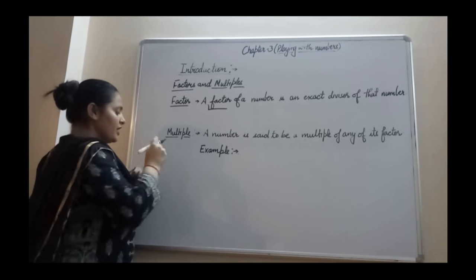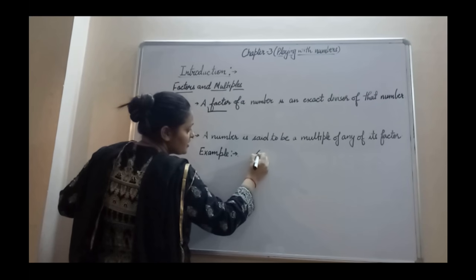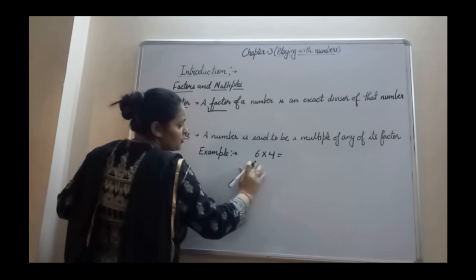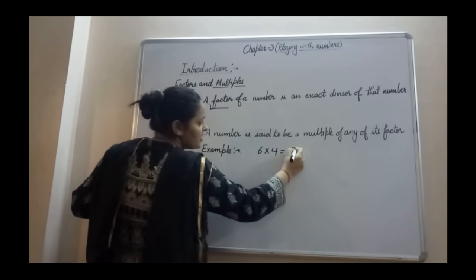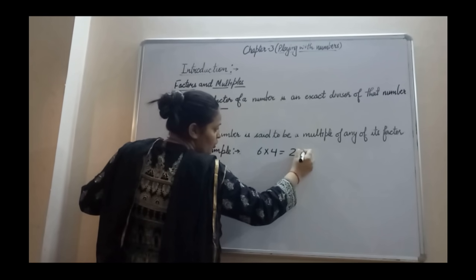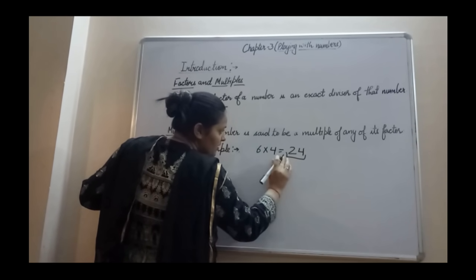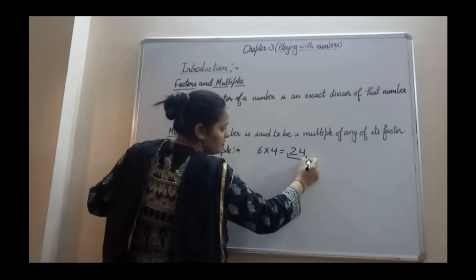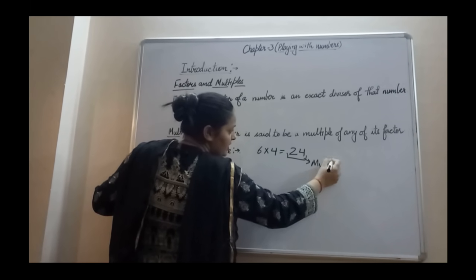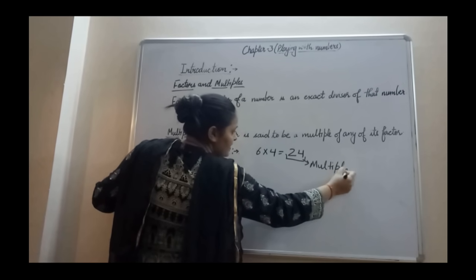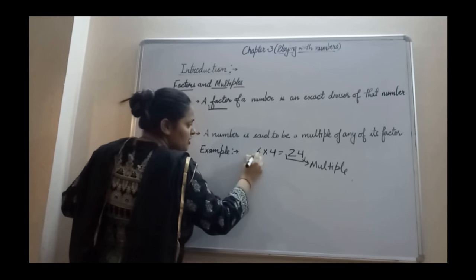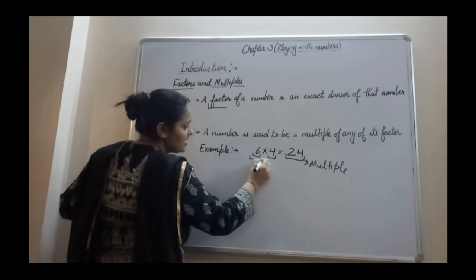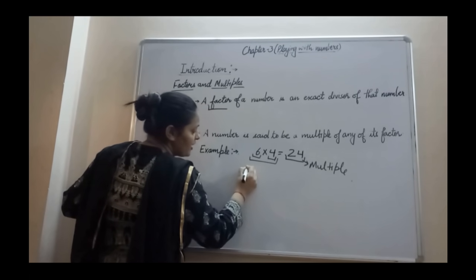Let's take an example. If I have 6 into 4, when you multiply 6 with 4 your result is 24. So when you multiply two numbers, the product you get is the multiple. And the two numbers which are being multiplied are called factors. So 6 and 4 are factors.